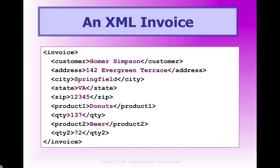First, let's take a look at how you can organize your XML data. Here's an invoice document. You can see that we have a customer, an address, city, state, zip. Homer Simpson likes donuts — we have our donuts, 137 of them. We have a second product, beer, goes good with donuts, and we have 72 bottles. So that's our invoice. You can see that we have an invoice, a customer node or element, and then the CData or the text data inside of it, and we do that for each of the pieces of data.